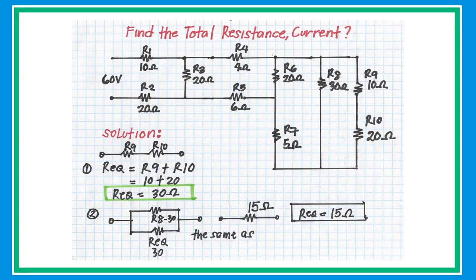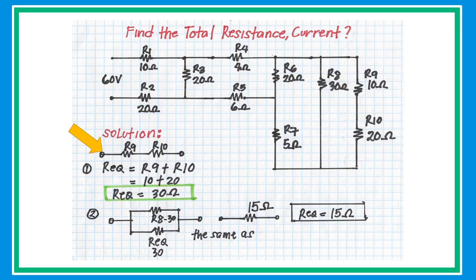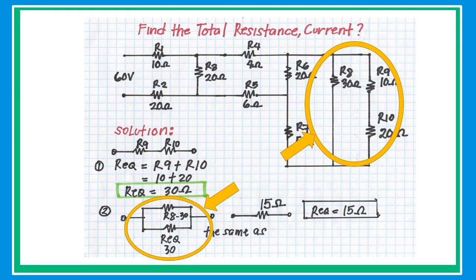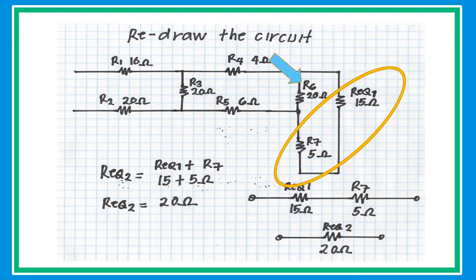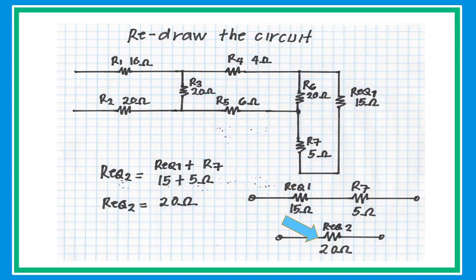In the next example it looks complex, but by collapsing and redrawing the circuit we can simplify it. First, R9 and R10 are connected in series, so add their values: R equivalent equals R9 plus R10, giving 30 ohms. Since this R equivalent is connected in parallel with R8 — both 30 ohms — get half of the value, which is 15 ohms. Redraw the circuit to simplify.